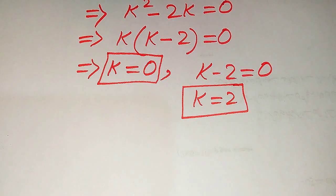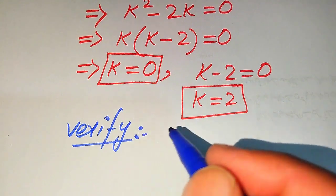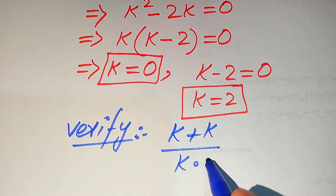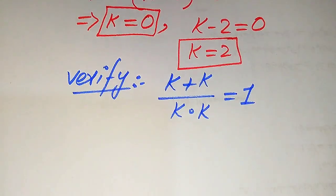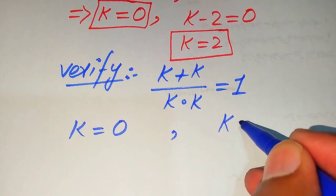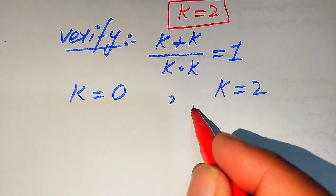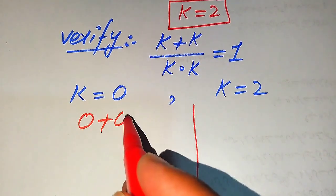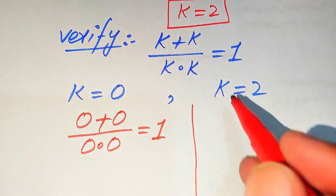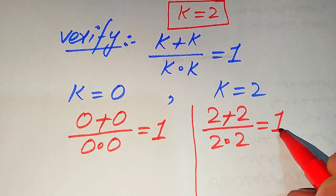Now we verify which roots are solutions and which are extraneous. The given equation is: (k + k) divided by (k multiplied by k) equals 1. We verify k equals 0 on one side and k equals 2 on the other. Substituting k equals 0 gives: (0 + 0) divided by (0 × 0) equals 1. Substituting k equals 2 gives: (2 + 2) divided by (2 × 2) equals 1.